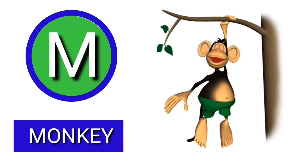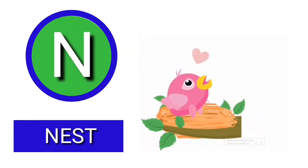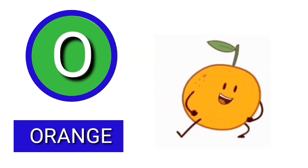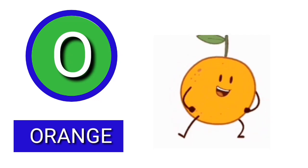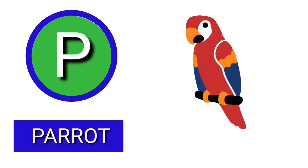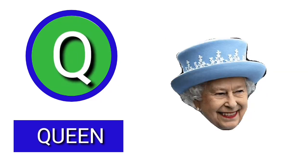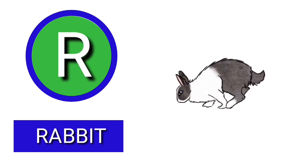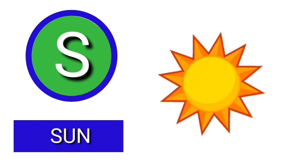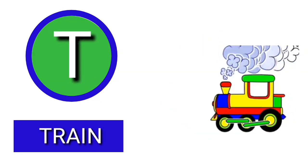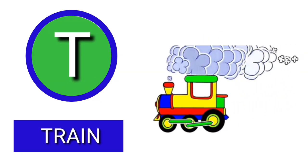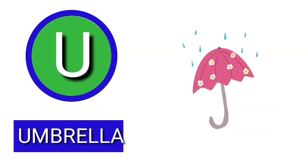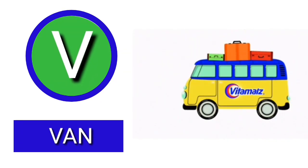M for monkey, N for nest, O for orange, P for parrot, Q for queen, R for rabbit, R for racket, S for sun, T for train, U for umbrella, V.